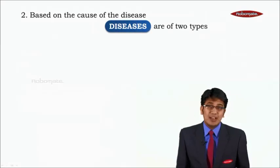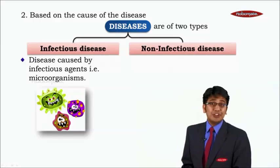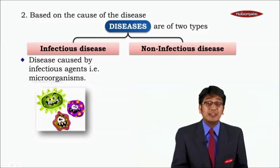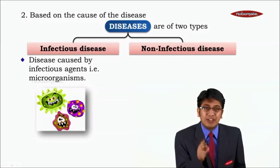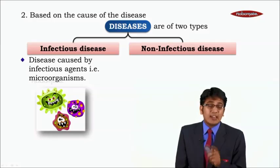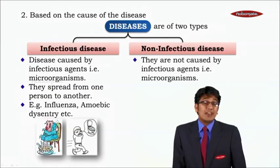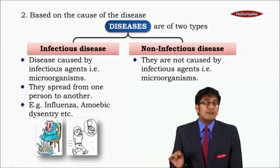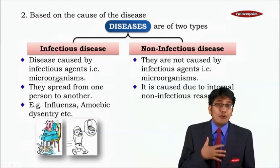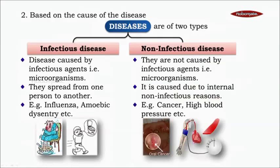Based on the cause of disease, there are again two types: number one, infectious disease, and number two, non-infectious disease. Infectious diseases are caused by some infectious agent, that is, a microorganism — it can be a bacteria, a virus, a fungus, or any microorganism. Non-infectious diseases are not caused by any infectious agent; they are caused due to internal, non-infectious reasons, for example, cancer and high blood pressure.